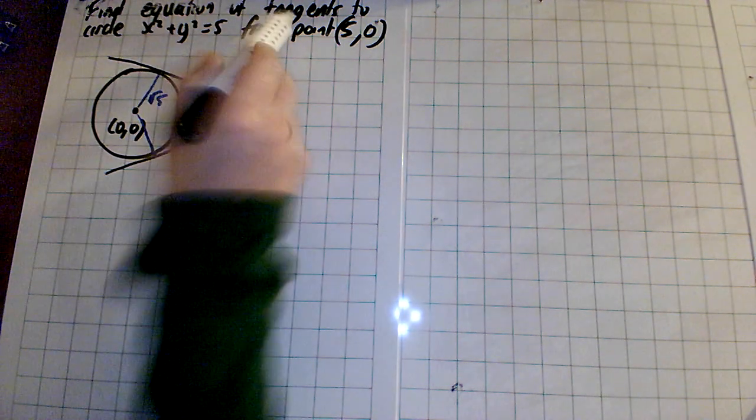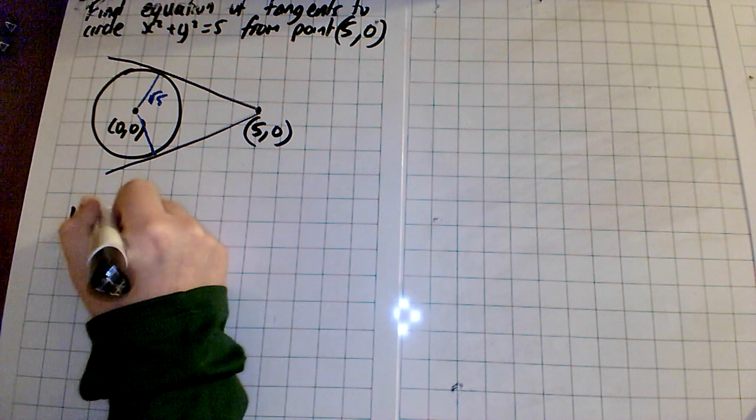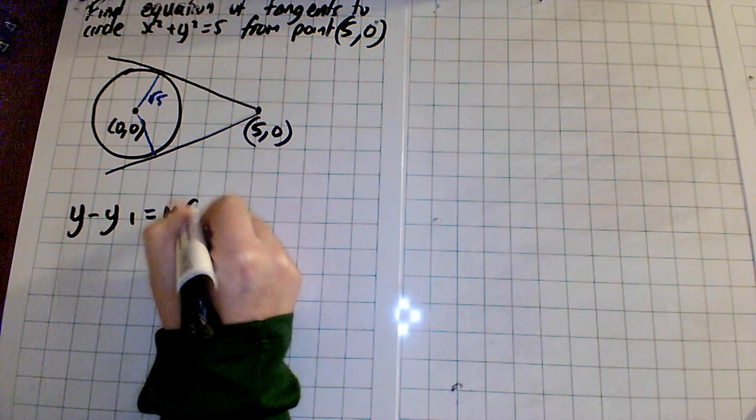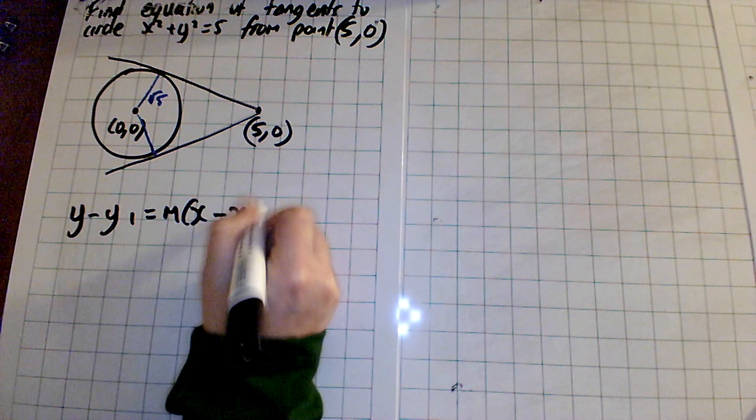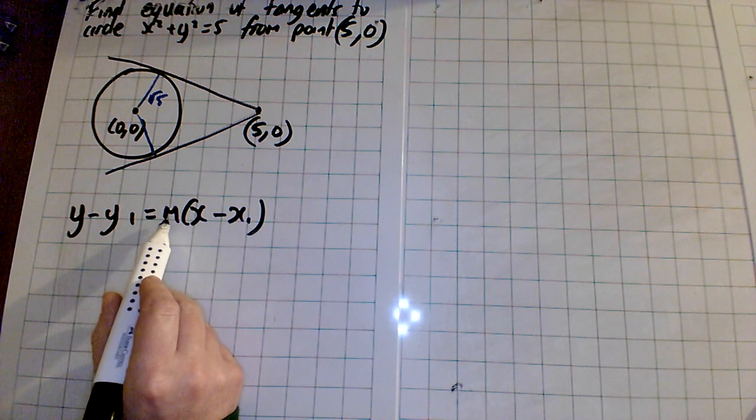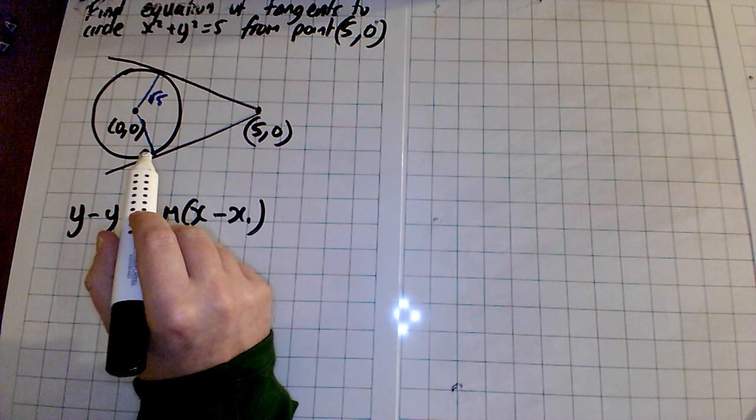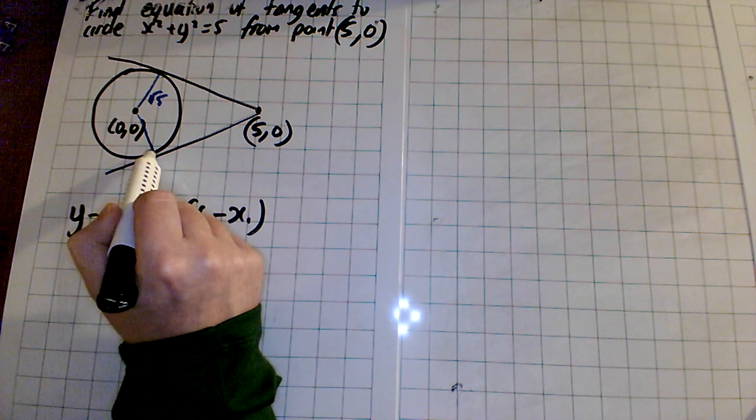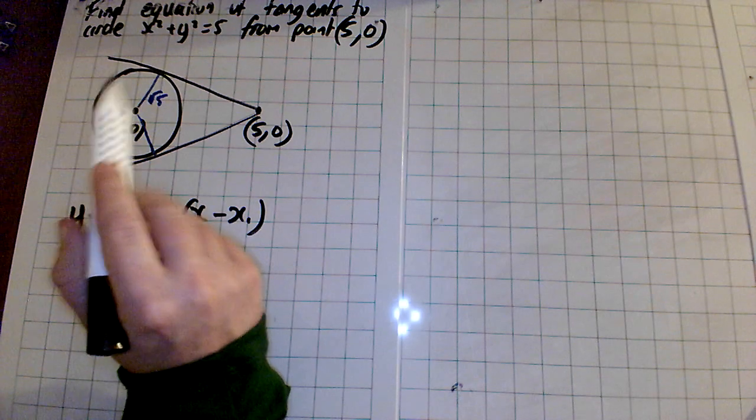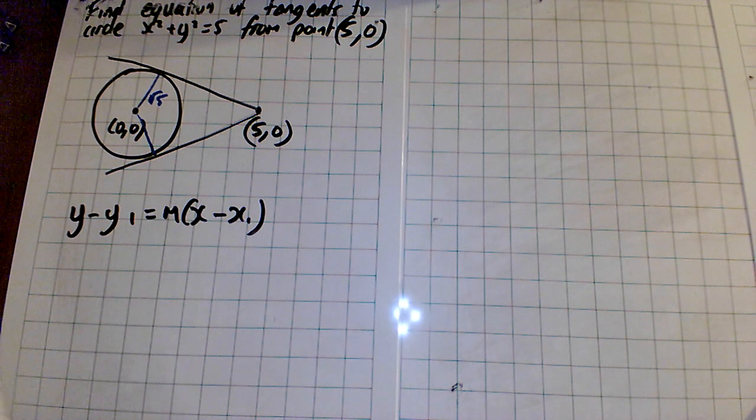And what we are looking for is the equation of these tangents, so this is the equation of a line: y minus y₁ equals m times x minus x₁. Now we usually need a point and the slope, but we only have a point. There is no other way of finding the slope. We don't have two points here and we could use the perpendicular, it's not like that. So if you have this particular type of question, this is how you proceed.